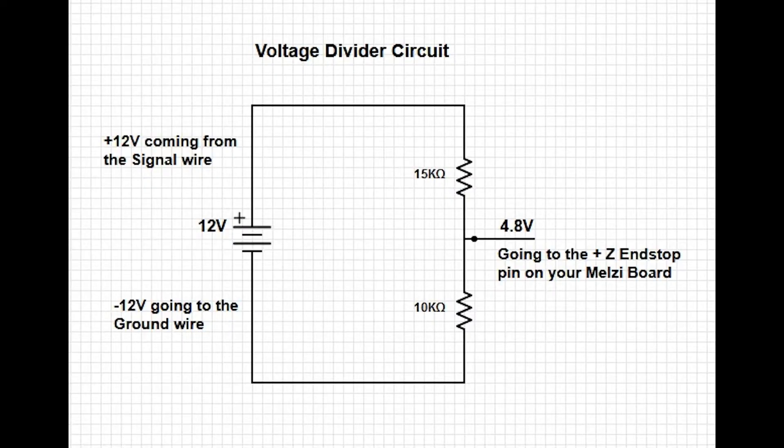The voltage divider circuit lets you power your sensor with 12 volts straight from your power supply, and then outputs a voltage of about 4.8 volts that you can use the signal to tell your end stop pin when the sensor is triggered or not. So effectively, it steps down the output voltage to one that your printer can actually use while still supplying enough power to make your sensor work.